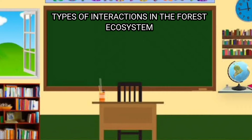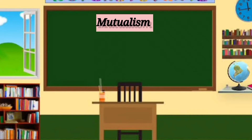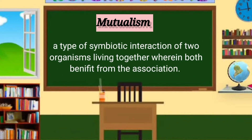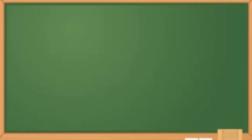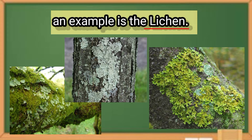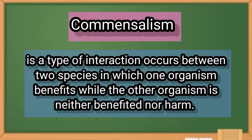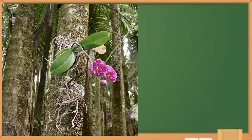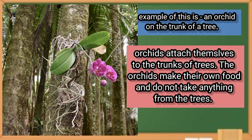What are the different types of interaction in the forest ecosystem? Mutualism is a type of symbiotic interaction of two organisms living together, wherein both benefit from the association. An example of this type of interaction is the lichen — lichen consists of a fungus and an algae growing together. Commensalism is a type of interaction that occurs between two species in which one organism benefits while the other is neither benefited nor harmed. An example of this is an orchid on the trunk of a tree.